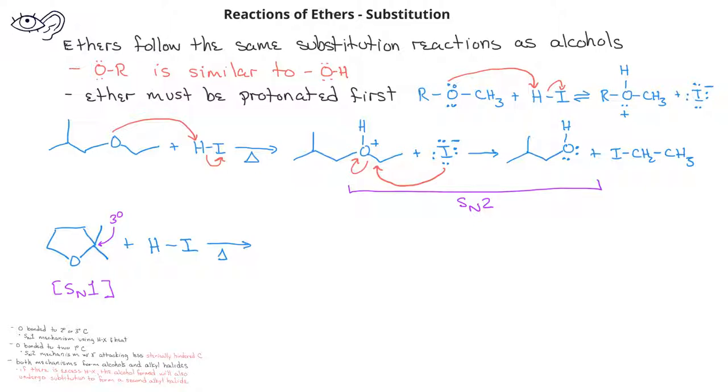Once the ether is protonated, the nucleophile I- will attack the tertiary carbocation, so that the iodide will be added to that tertiary carbon.